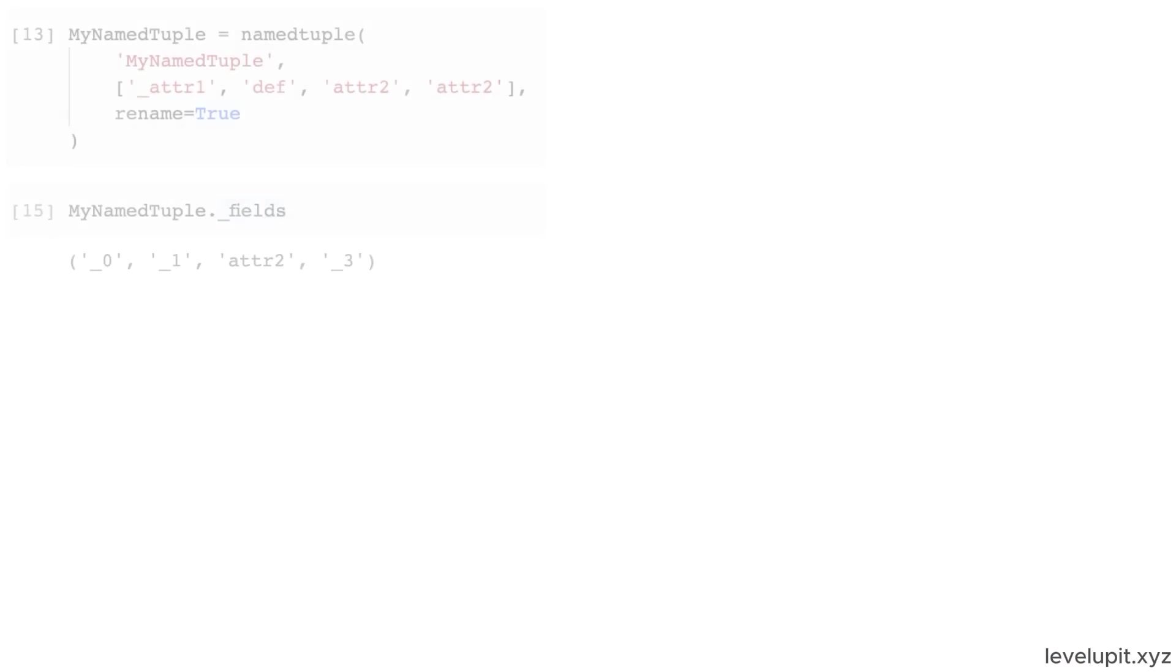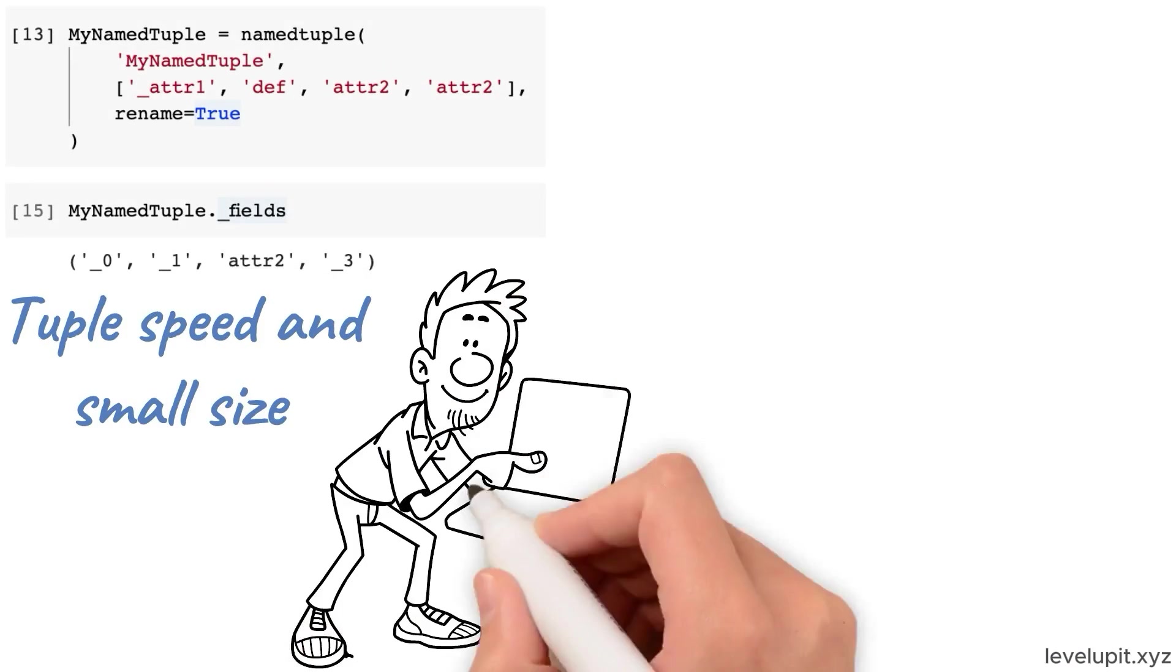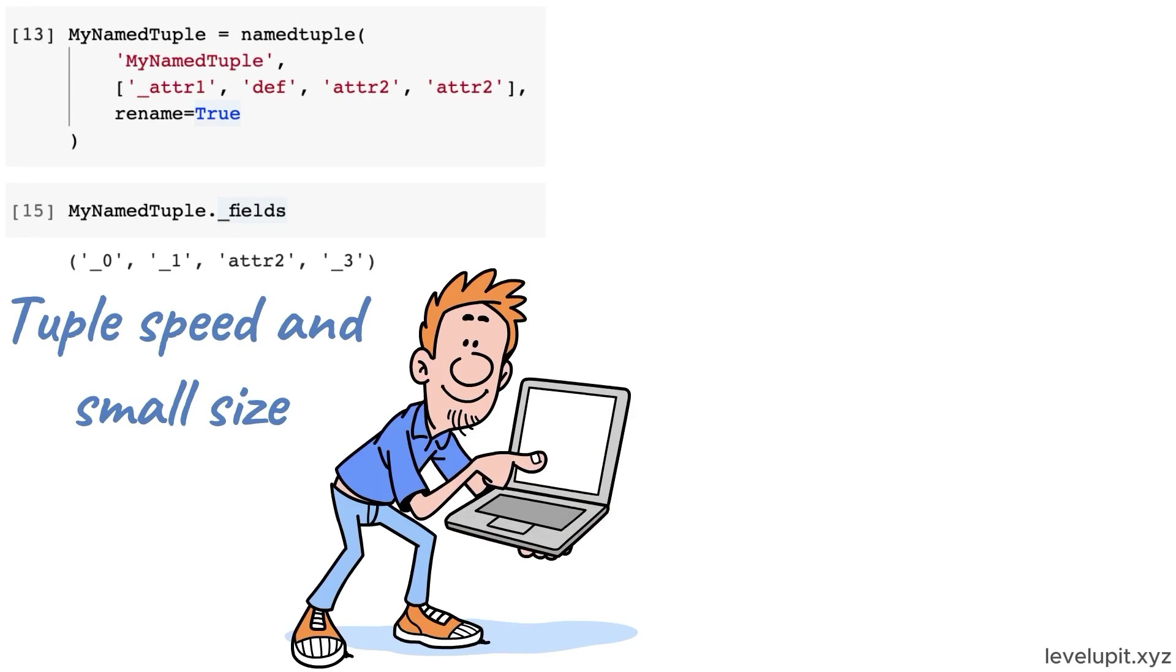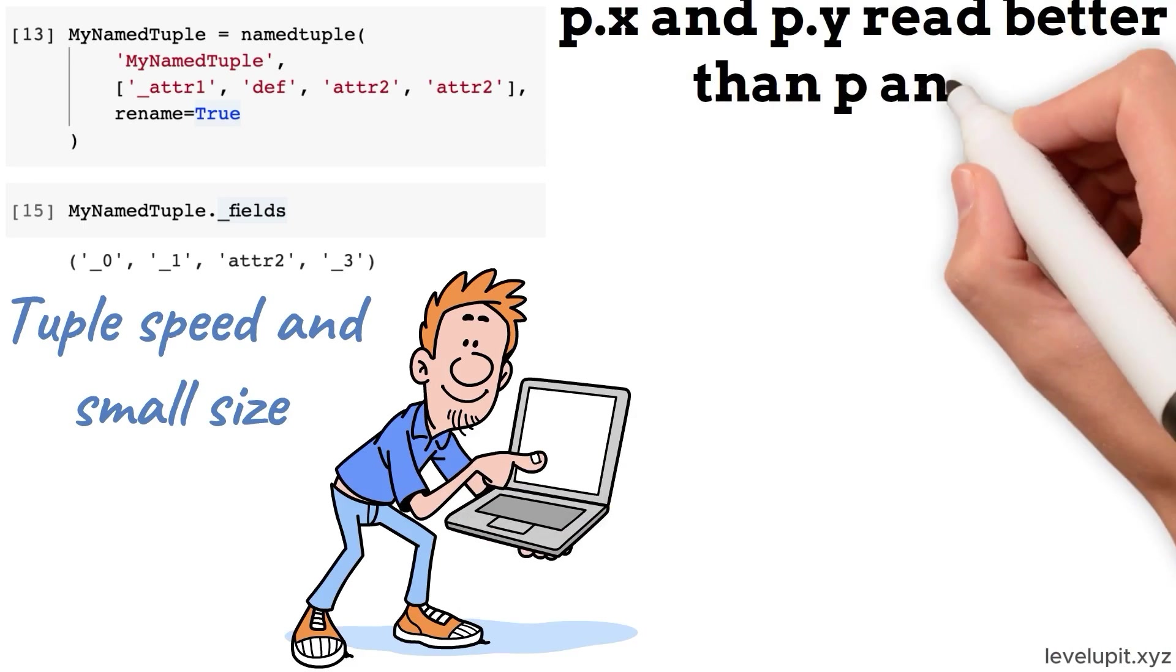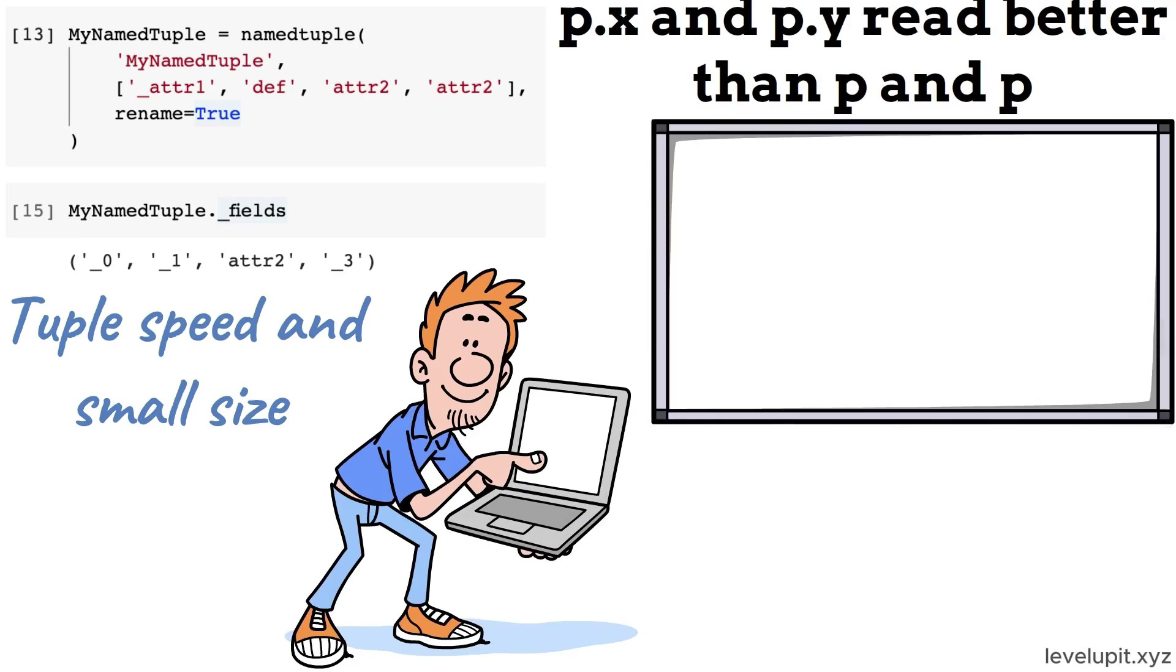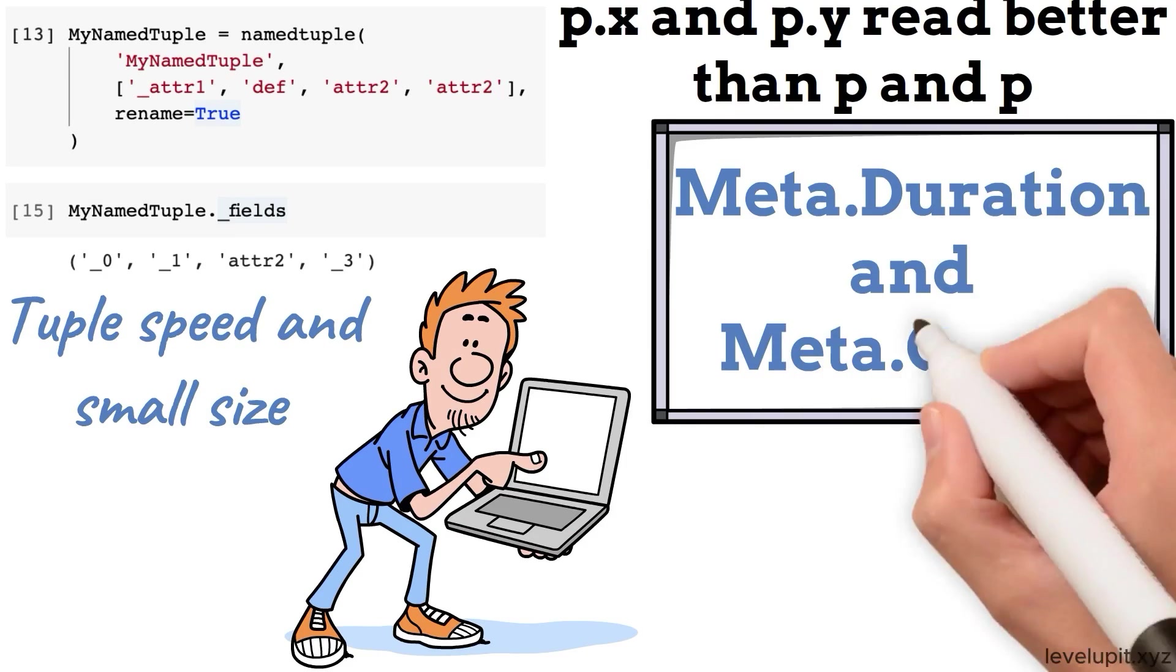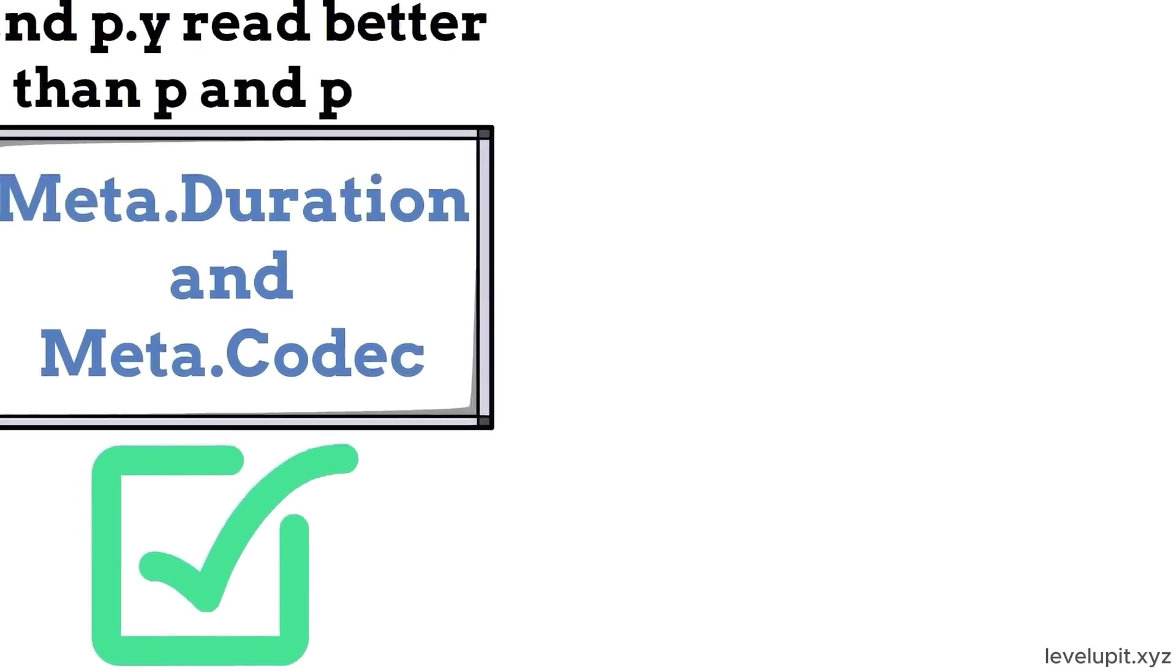namedtuple gives tuples readable names. It keeps tuple speed and small size, but lets you access fields by name. For a point, p.x and p.y read better than p[0] and p[1]. For media metadata, meta.duration and meta.codec are more meaningful than meta[0] and meta[1]. If a full class is not needed, namedtuple keeps code light and clear.